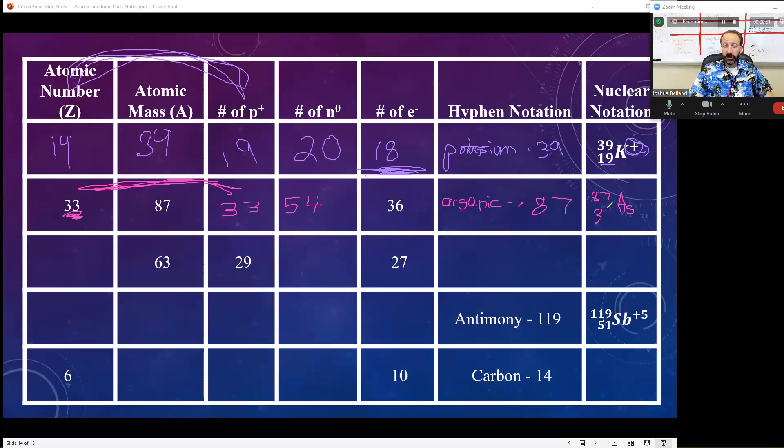Now, since this is on the ion side, I'm thinking there might be a charge. Does 33 positives cancel 36 negatives? No. What do I have more of? Negative electrons. What should this be? Negative by how many? Hope you're saying three, because it is. I've got three more electrons than protons, so it's going to be a negative three. There's my nuclear notation.